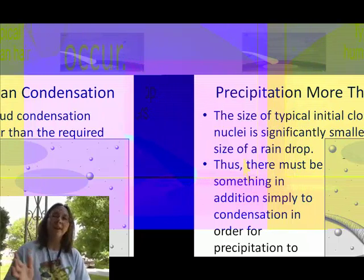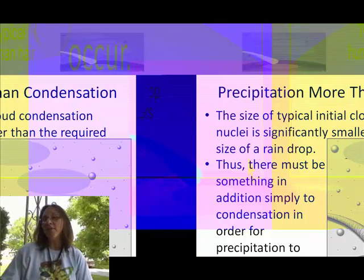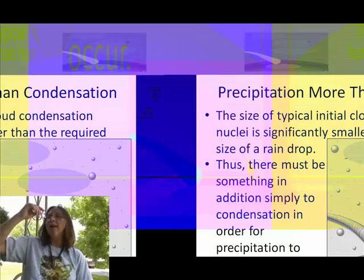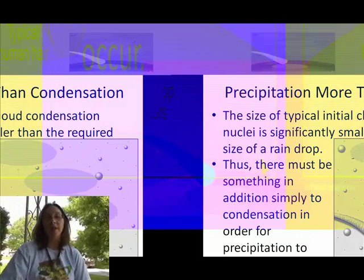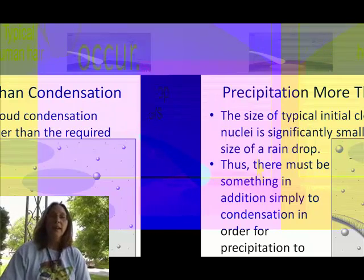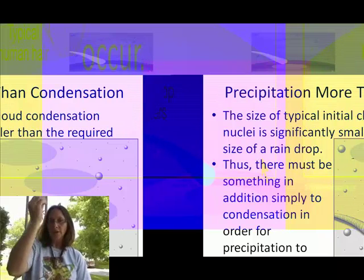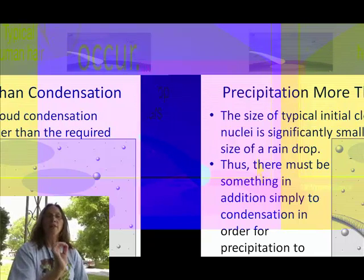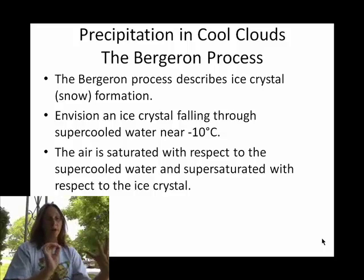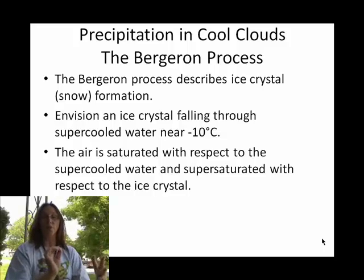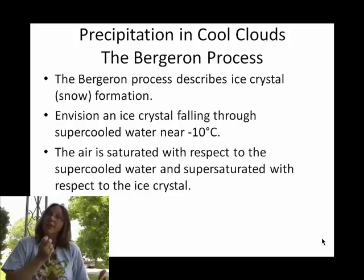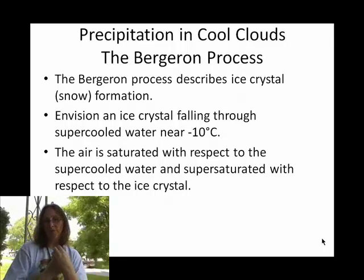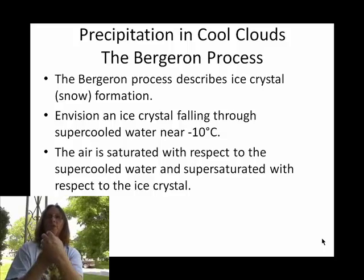Picture an ice crystal — solid water — falling through super cooled water. The air is saturated with water vapor with regard to the super cooled liquid water, but with regard to the solid ice crystal, it is even more super saturated. So water vapor particles preferentially deposit onto that solid ice crystal. The ice crystal is 'itching' more — it's super saturated relative to the falling solid ice — so water vapor molecules collect onto it.